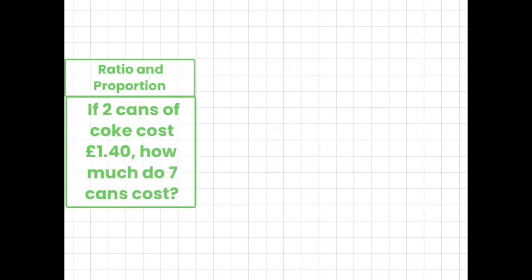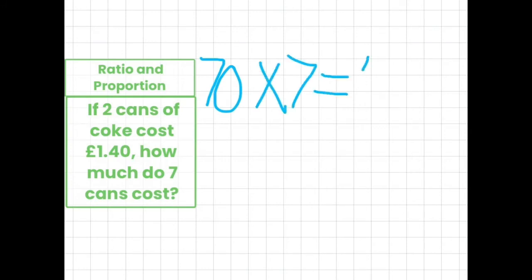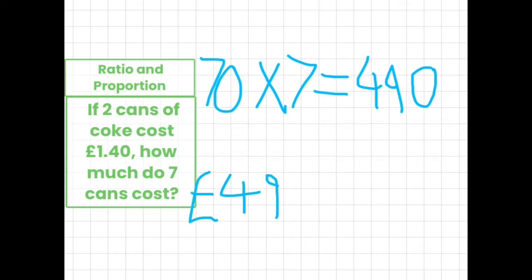If 2 cans of Coke cost £1.40, how much does 7 cans of Coke cost? First thing we do is £1.40 divided by 2, which is 70p. Then we do 70 times 7, which equals 490. And then we add the decimal point, so the answer is £4.90.